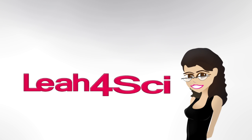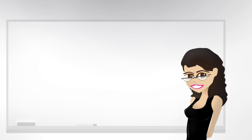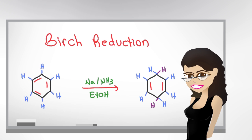Leah here from leahversai.com. In this video we're going to look at the Birch reduction reaction and mechanism starting with benzene, and then we'll see how the products differ for substituted benzene when we have an electron donating or electron withdrawing group as the substituent.